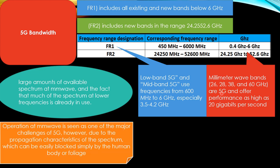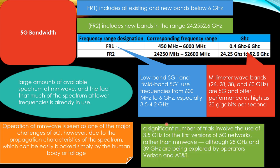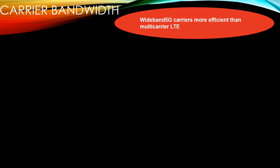Operation at millimeter wave is seen as one of the major challenges, even though it offers wide spectrum. This is because millimeter wave signals have very weak propagation characteristics and can be easily blocked even by a human body, creating significant coverage problems. A significant number of trials and even commercial 5G deployments have started in many countries using 3.5 GHz, while operators including Verizon and AT&T have started using millimeter waves for trials in hot spots.